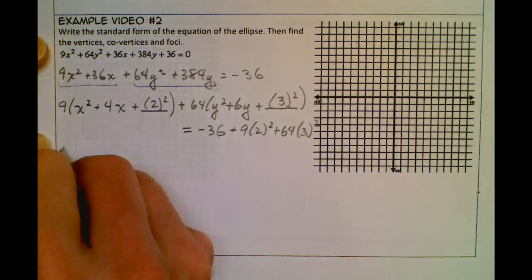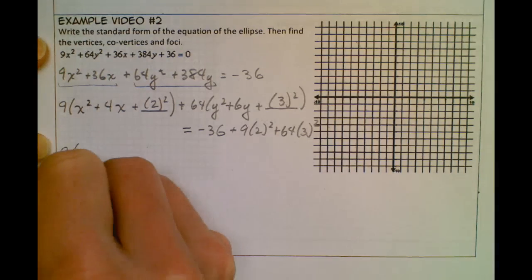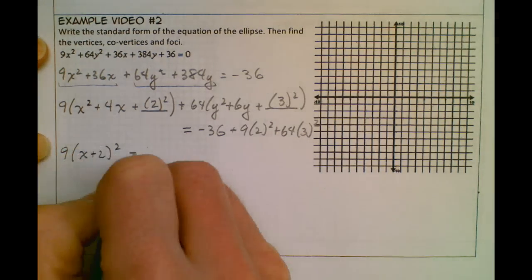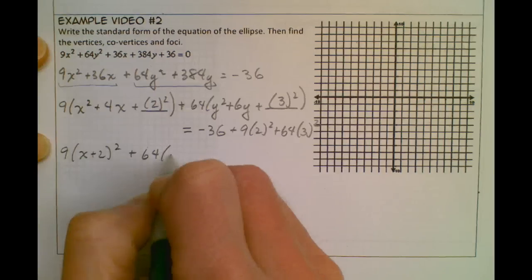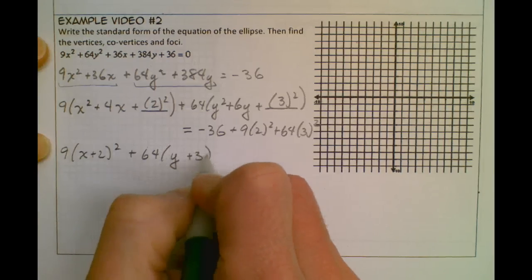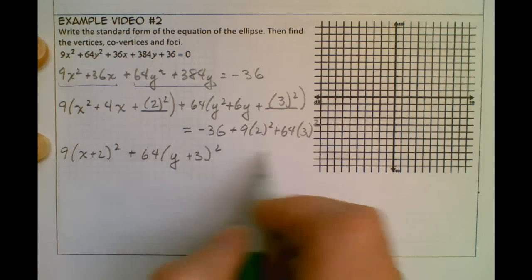So let's go ahead and start simplifying. I have 9(x + 2)² + 64(y + 3)², and I add all this up, and you get 576.